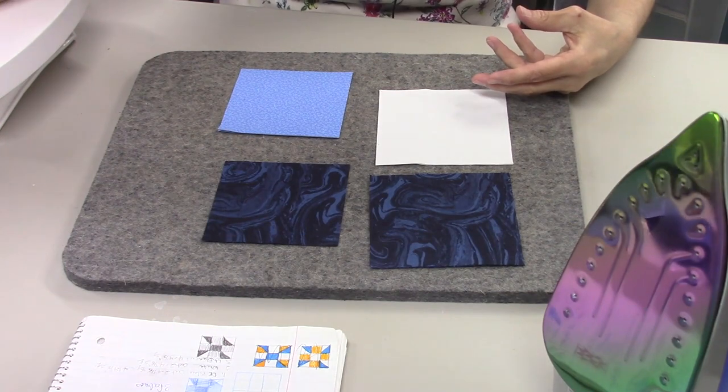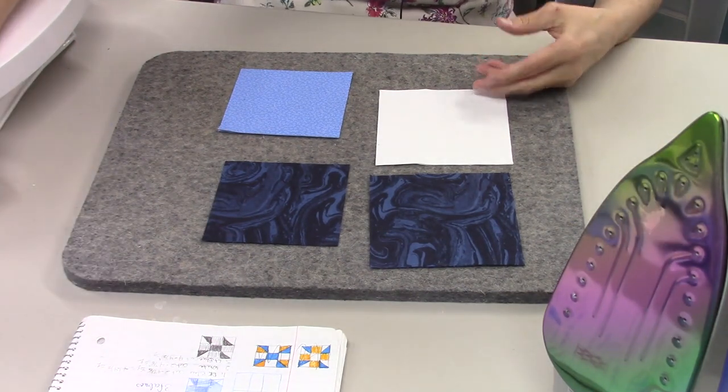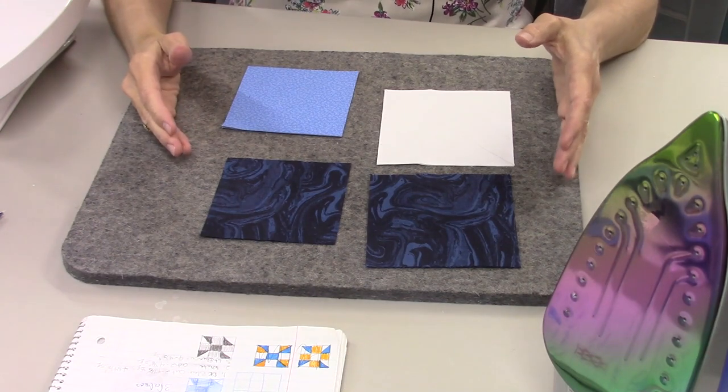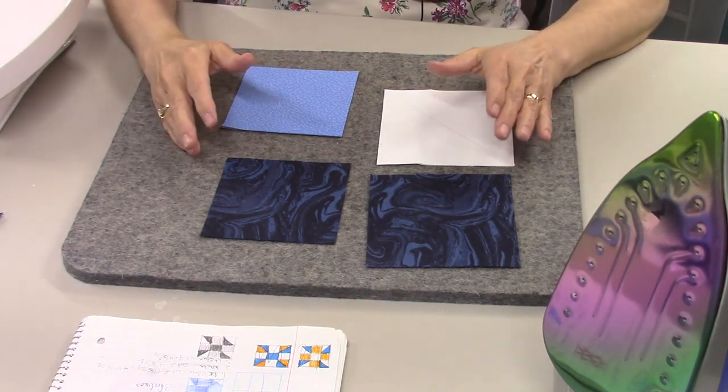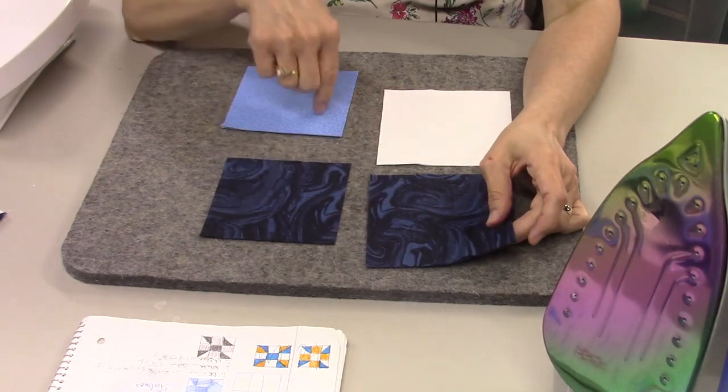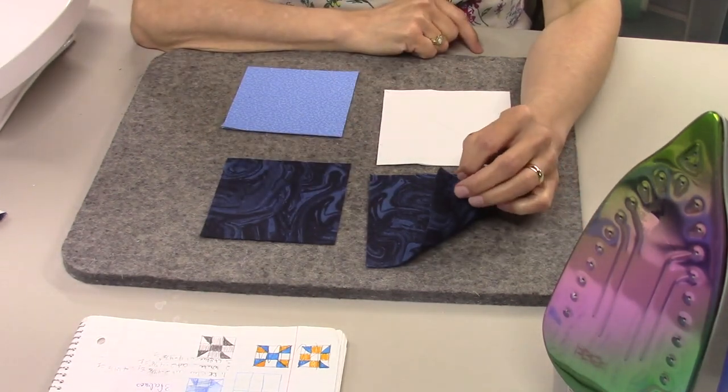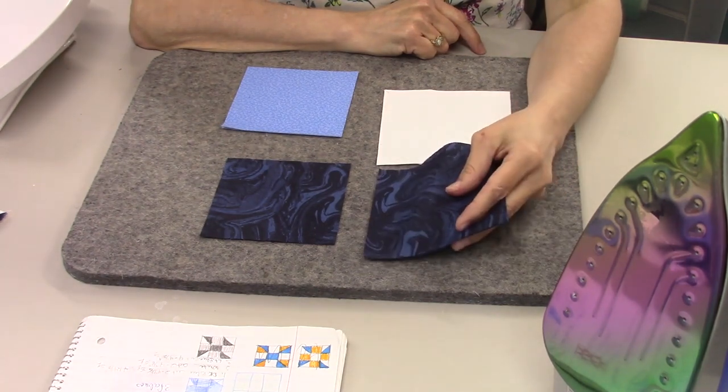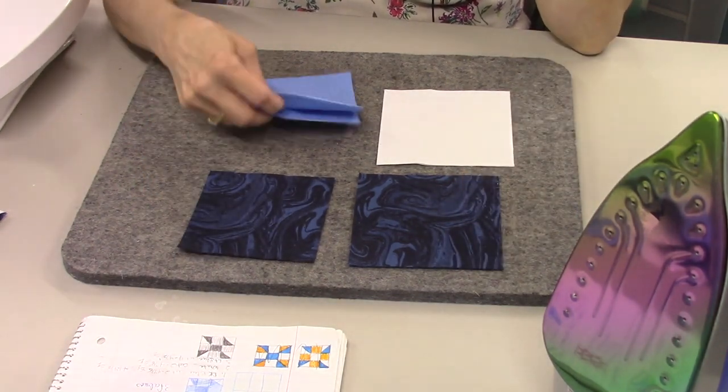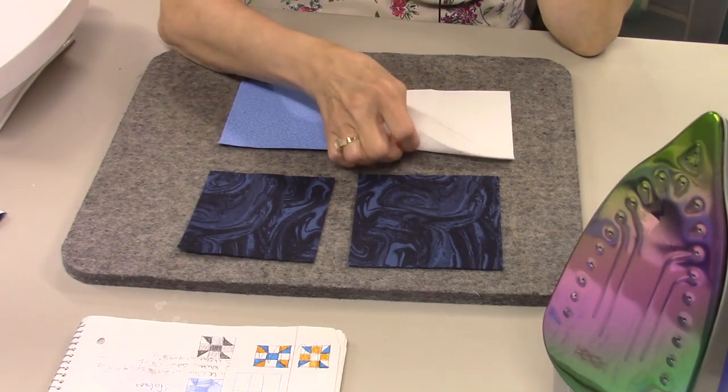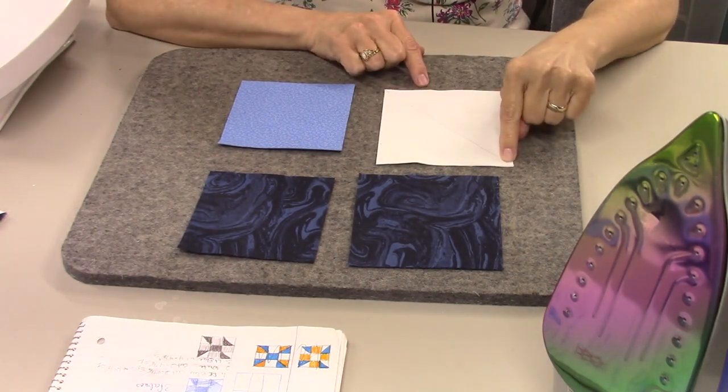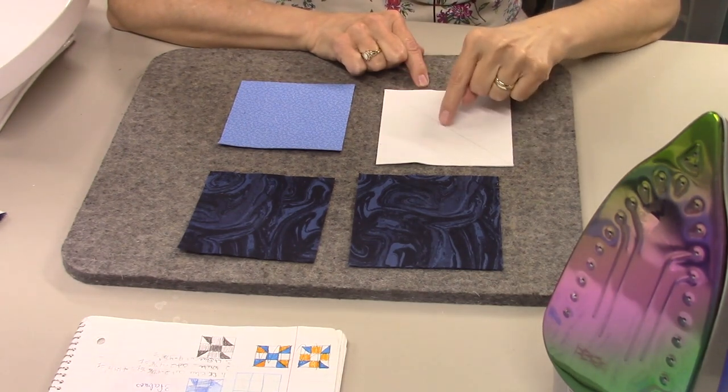Now I'm making this as a 12 inch block, but you can make it as a 9 inch block. If you can figure out the math, you can make this a 6 inch, 8 inch, whatever you want. For this one you'll need a dark, medium, and a light. The light is your background. For the dark, you need two pieces that are 4 and 7/8 inch square and one that is 4 and 1/2 inch square. For your medium, you need four pieces that are 4 and 1/2 inch square. For your light, you need two pieces that are 4 and 7/8 inch square.